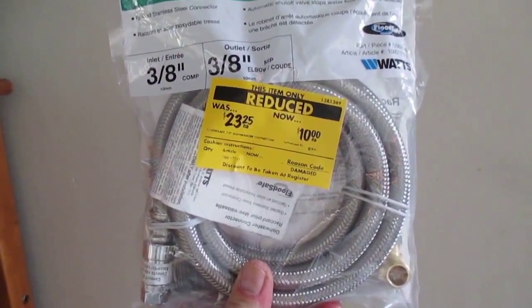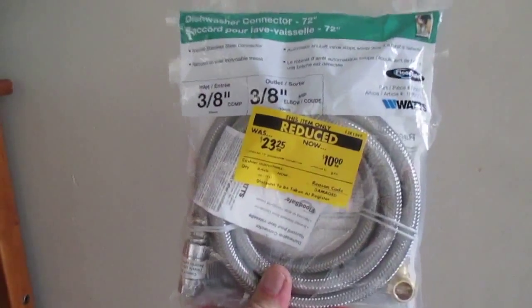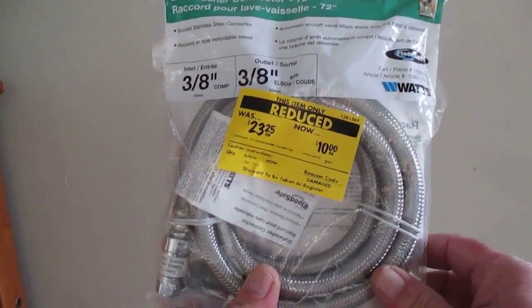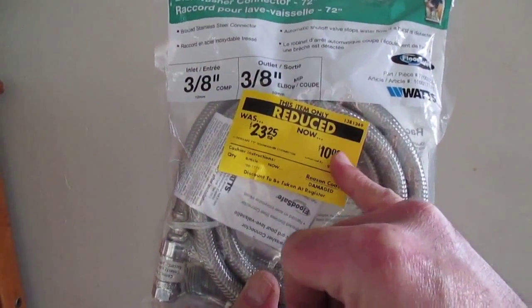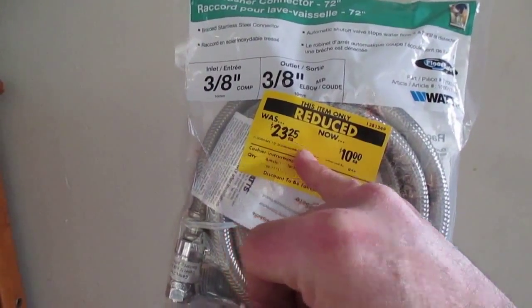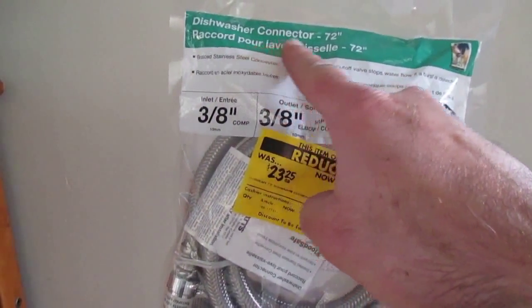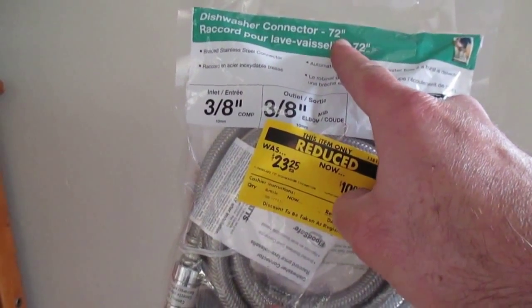Here is what we're going to use to make our connection to the hot water supply. February 2016, got a great deal on this at Home Depot. It's normally $23, $25, got it for $10. You can see up here, dishwasher connector, 72 inch, so I wanted the nice and long one.